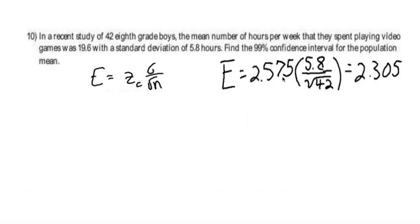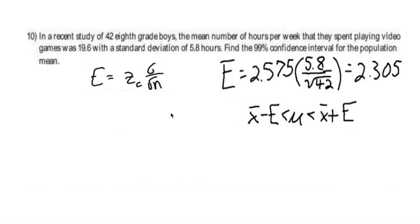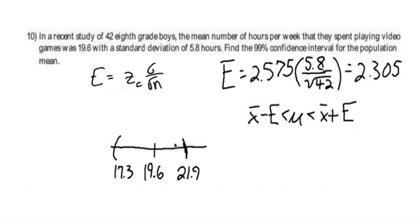For this example, we had 2.575 as our critical value. So we need to move 2.575 standard deviations above and below the mean to encompass 99% of the data. We have this one sample, and we're going to take our standard deviation of our sampling distribution — assuming we took multiple samples — and stretch out to 2.305 hours above and below our sample mean to build our confidence interval. We take our sample mean, add and subtract that margin of error. Here's our sample mean of 19.6 for this one sample of 42 eighth grade boys. We add the margin of error to get the upper limit of 21.9, and subtract the margin of error to get the lower limit — adding and subtracting 2.305 to build this interval.